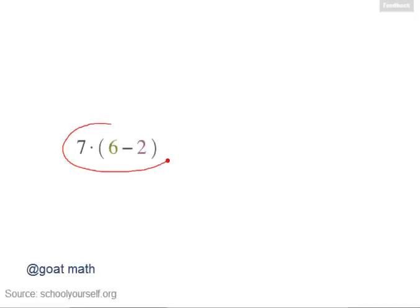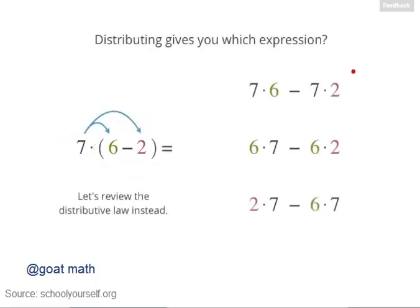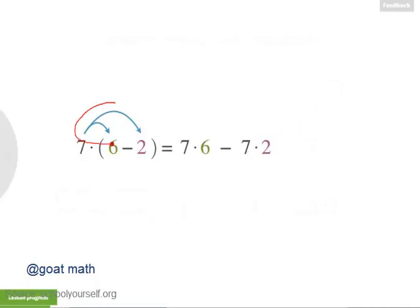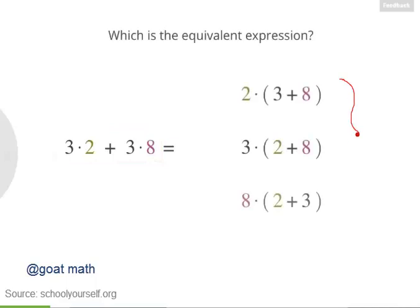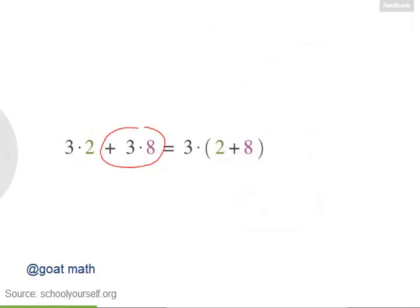Suppose you have 7 times (6 minus 2), with the 6 minus 2 in parentheses. According to the distributive law, which of these is an equivalent expression? Right, you distributed the 7 onto the subtraction inside the parentheses, giving you 7 times 6 minus 7 times 2. Next, try working backwards using the distributive law. You're starting with 3 times 2 plus 3 times 8. Which of these is an equivalent expression? Nicely done. So 3 times 2 plus 3 times 8 equals 3 times (2 plus 8).